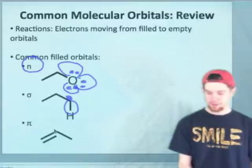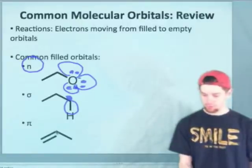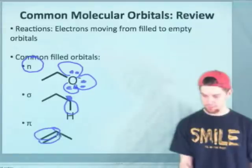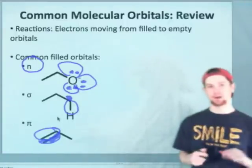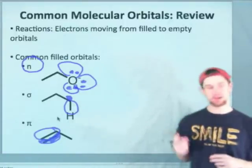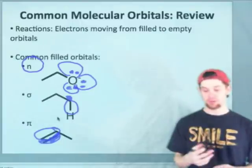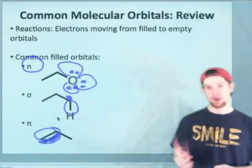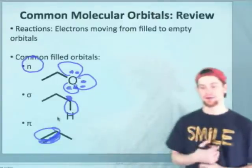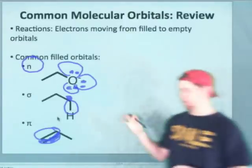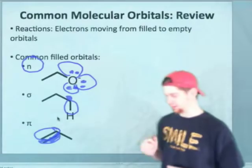And then finally, the pi-type orbital, which is a little bit tough to draw, but looks something like this, where we have that nodal plane—the plane of the molecule—is a third kind of nucleophilic orbital. And you'll often see the pi orbital act as an electron donor or nucleophile in a reaction. So these are the three common filled orbitals: n, sigma, and pi.